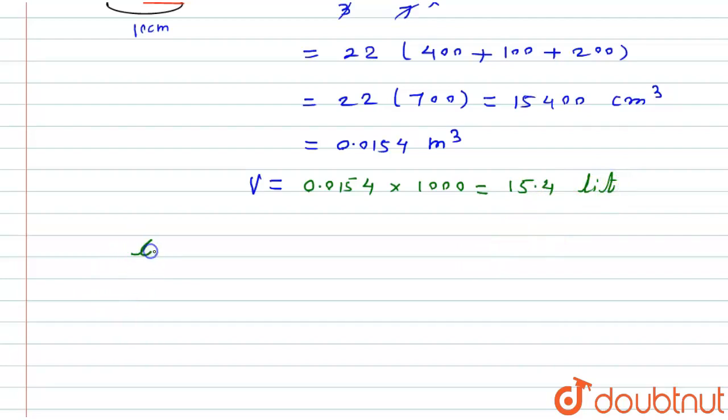Now the cost which is required to fill the bucket by the milk will be the volume in liter, that is 15.4 into rate per liter that is 30, which will be equals to 462 rupees. So here is the cost for the milk.